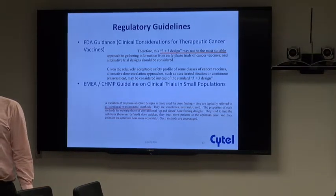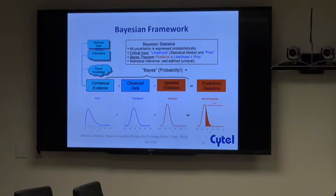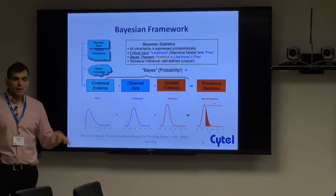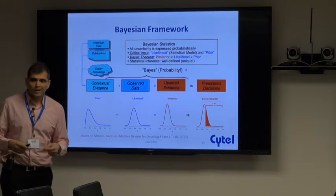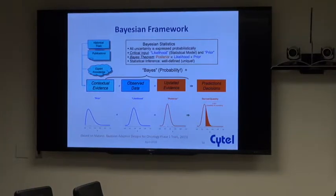That's why we included modern adaptive model-based methods. With the exception of the three-plus-three design, all of them utilize Bayesian methodology and the Bayesian paradigm. This means we synthesize information from prior evidence — historical trials, publications, or expert elicitation — into a prior distribution, then combine it with observed data to form the posterior distribution. Inference is based on the posterior distribution or the posterior predictive distribution, which is the distribution of your data integrated over the posterior.